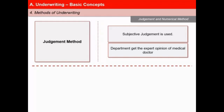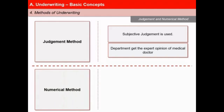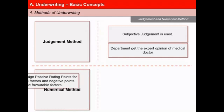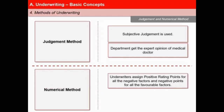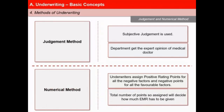And second is the numerical method. Under this method, the underwriter assigns positive rating points for all negative or adverse factors and vice versa. The total number of points so assigned will decide how much extra mortality rating or EMR has been given. Higher the EMR, more substandard the life is. If the EMR is very high, insurance may even be declined.